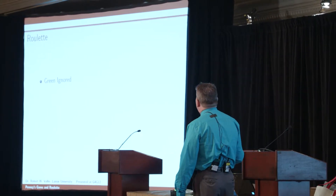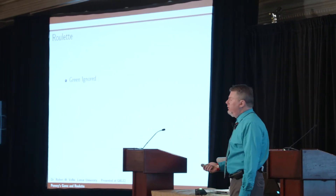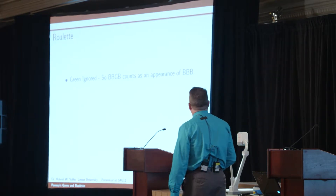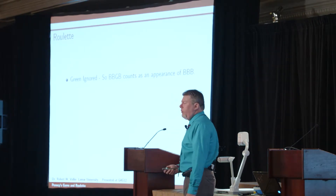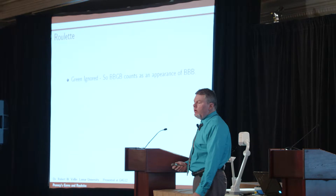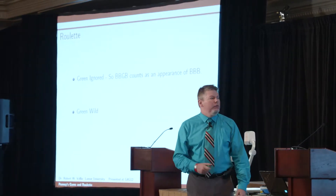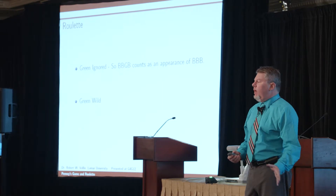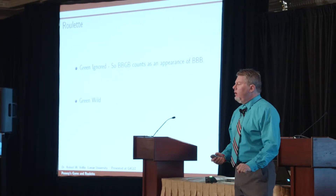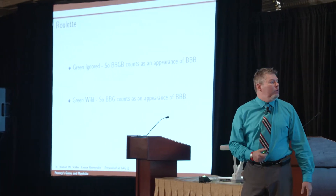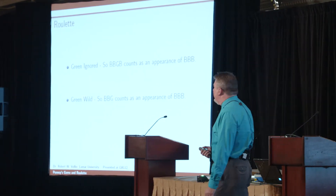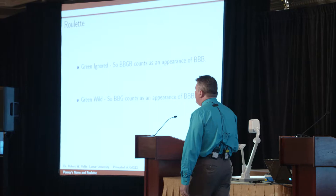There are two ways to interpret the green space. One way: the green space is ignored, so a spin of black, black, green, black counts as an appearance of three blacks in a row. The other possibility: green is a wild card, counted as black or red depending on your sequence. In that case, black, black, green would count as an appearance of black, black, black.